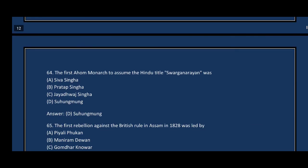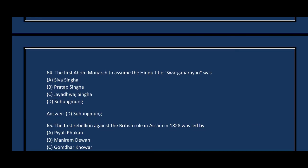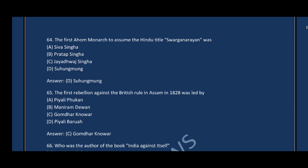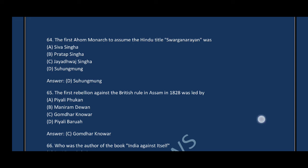Question number sixty-four: The first Ahom king to assume the Hindu title Swarganarayan was — the correct answer is option D, Sukhaamung. Question number sixty-five: The first rebellion against British rule in Assam in 1828 was led by — the correct answer is option C, Gomdhar Konwar.